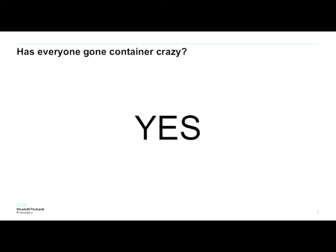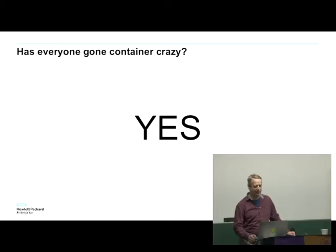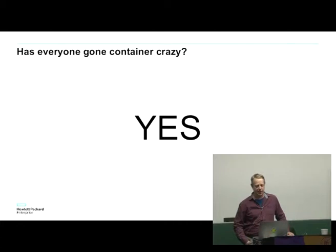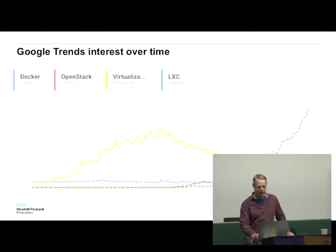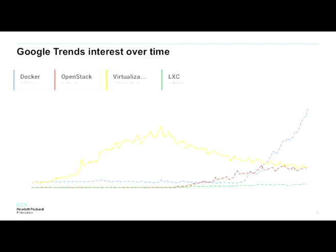It seems like everyone's gone container crazy. You can't read an IT magazine without someone talking about Docker. I found this graph — originally done in 2015, which I reproduced here. It shows Google Trends, the number of searches for a particular topic. It's not a scientifically accurate graph, but the yellow line is searching for virtualization, red is OpenStack, and if you thought OpenStack was crazy, just look at the blue line. In 2015 the trend was going upwards, and this year it's continued to go upwards at about the same rate. Containers seem to be a bigger thing.